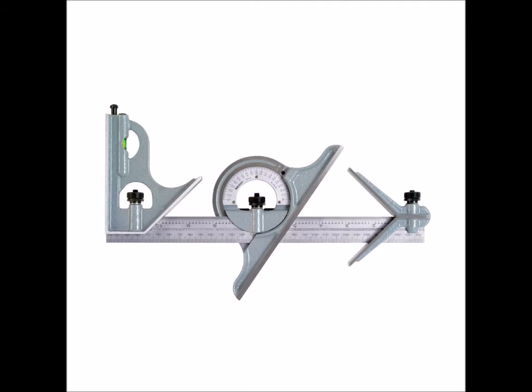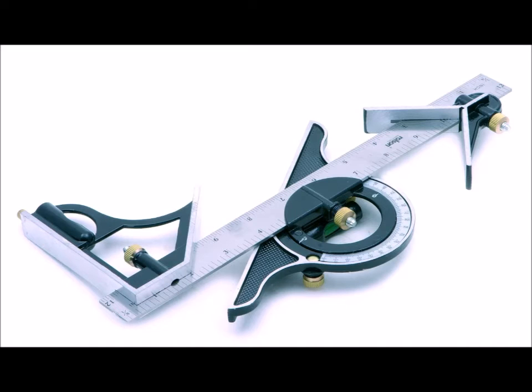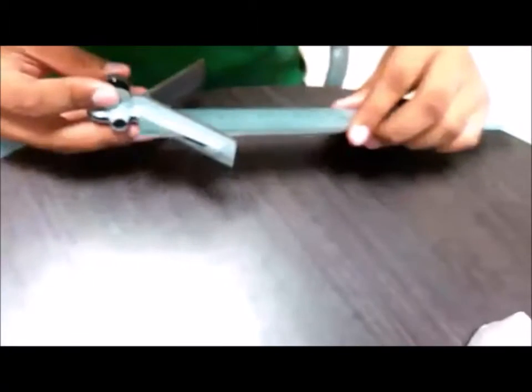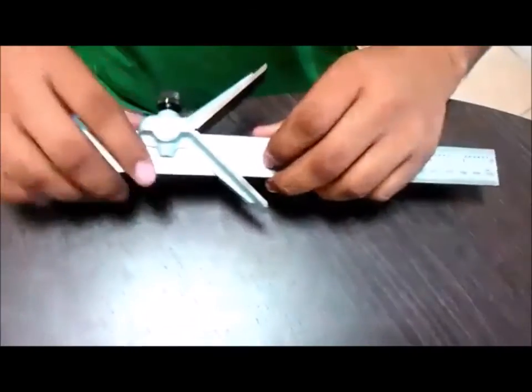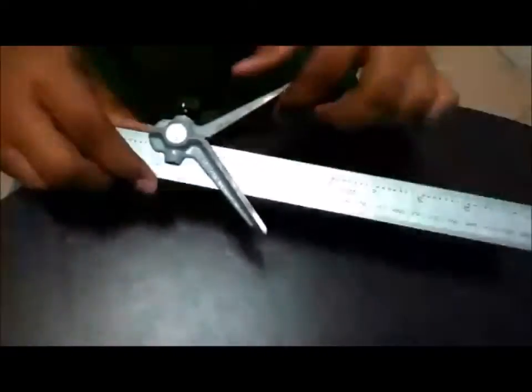Escuadra universal de combinación. La gran ventaja del uso de esta escuadra de combinación es que cumple con la función de diversas herramientas de medición. Consiste en una regla que lleva montada una serie de accesorios útiles e intercambiables, denominados cabezales.